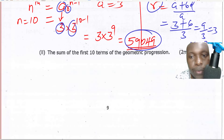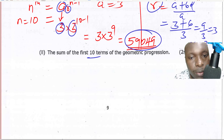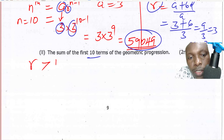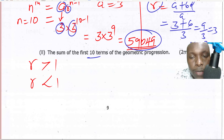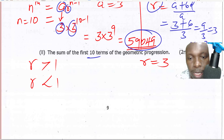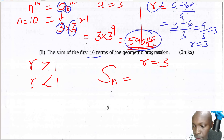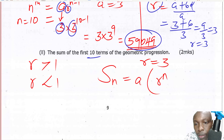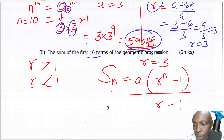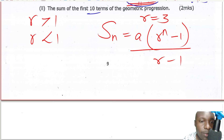Now for the sum of the first 10 terms of the GP. There are two formulas depending on the value of R. Since R equals 3, which is greater than 1, we use the formula S_N = A(R^N − 1) / (R − 1). Substituting A equals 3, R equals 3, and N equals 10.